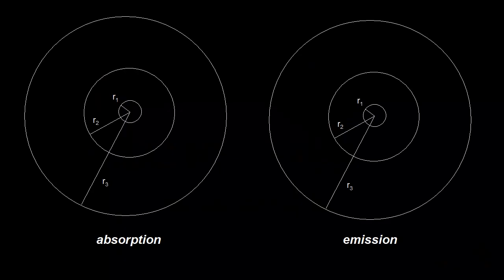We've been talking about the Bohr model for the hydrogen atom. The hydrogen atom has one positive charge in the nucleus. Here's our positively charged nucleus, and a negatively charged electron. Going by the Bohr model, the negatively charged electron is orbiting the nucleus at a certain distance — here at a distance of r1. This electron is in the lowest energy level, the ground state: the first energy level, E1.